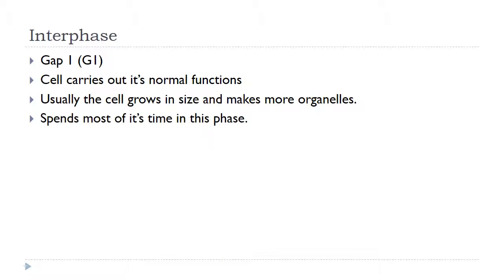Gap one is when a cell carries out its normal functions. Throughout most of interphase the cell works normally — the only difference is that it grows in size and makes more organelles. A lot of people forget that cells perform their normal functions when they're in gap one. This is really important because if the cell doesn't do its normal job, it's not going to be helpful and your body has no purpose for it. We also see this normal functioning in gap two as well.